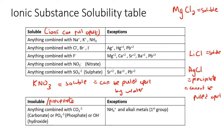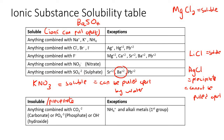Anything combined with SO4²⁻ is soluble. For example, let's use barium sulfate — they said anything combined with SO4 is soluble, except if it's Ba, Sr, or Pb. Since we're using barium, that means BaSO4 is actually insoluble — it forms a precipitate, which means water cannot pull it apart.